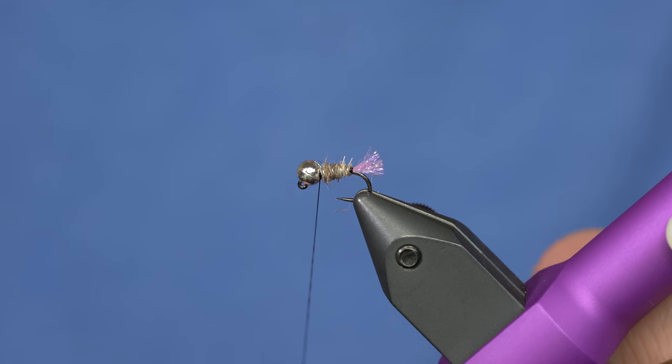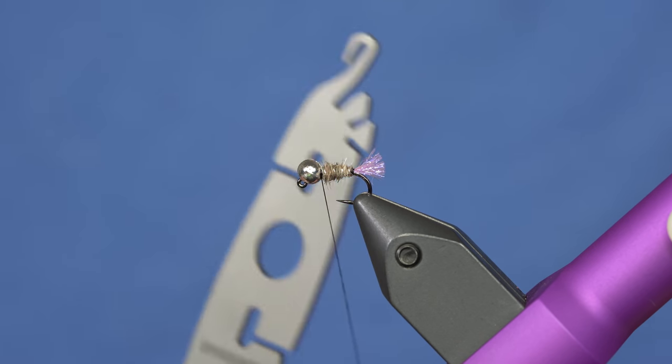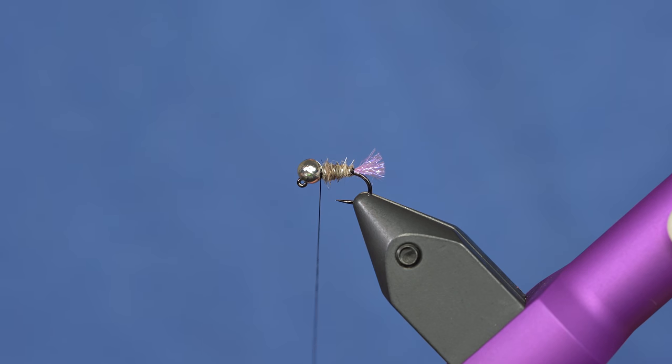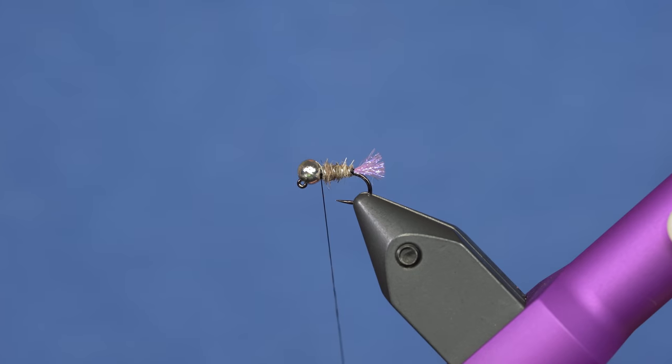Now we're ready to put the collar in. This is probably the most complicated part of the fly, but still not very complicated at all. I'm going to use my fancy multi-loop tool and my fancy multi-clamp tool. But whatever you like to use to get CDC in a loop, use it.